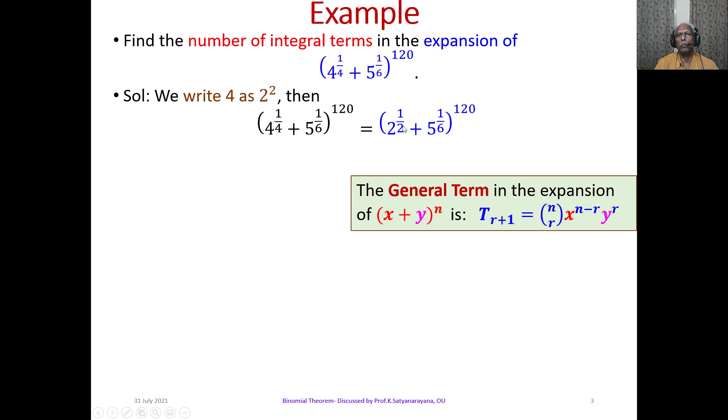T_(r+1) = 120Cr × (2^(1/2))^(120-r) × (5^(1/6))^r, that is equal to 120Cr × 2^((120-r)/2) × 5^(r/6).